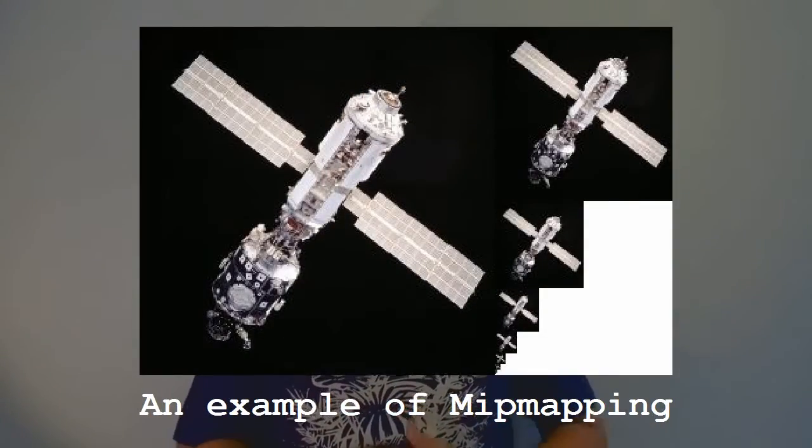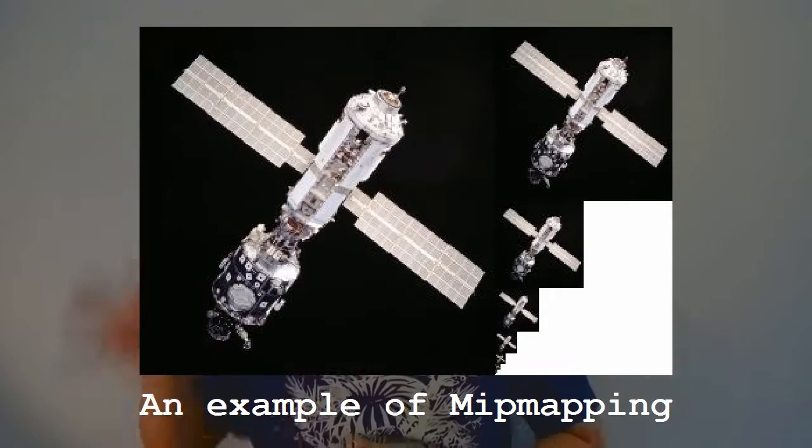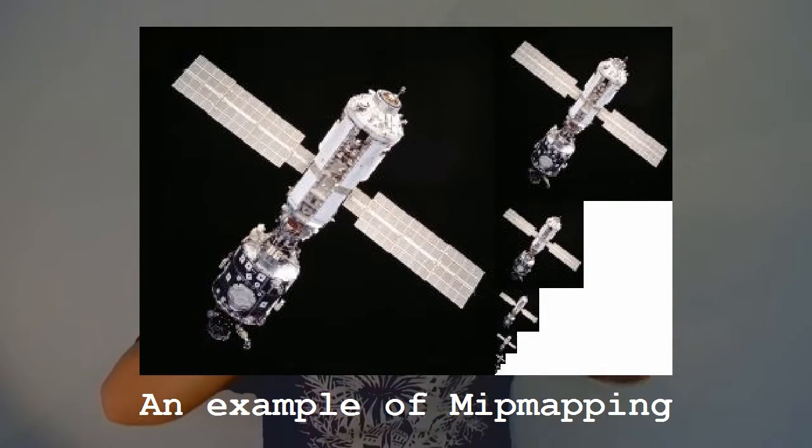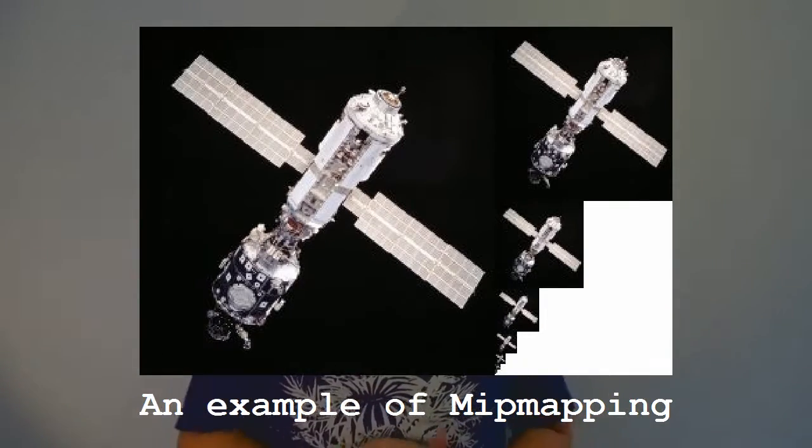Here's how mipmapping works. Basically, you have a high resolution texture, and within the same file, this high resolution texture is actually halved and saved in the same file, and then halved again and saved in the same file. Essentially, what you end up with is an image containing a high resolution texture with lower resolution copies just sitting around in the same image.